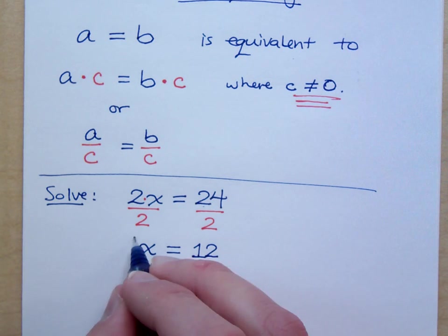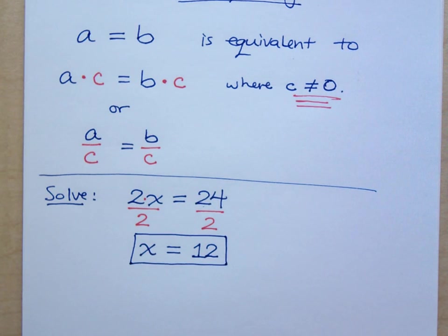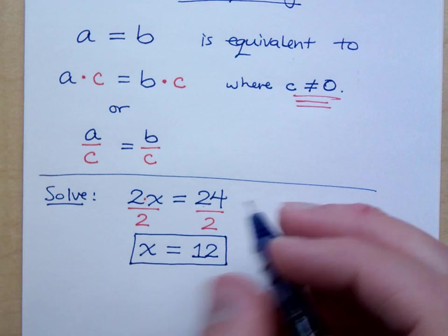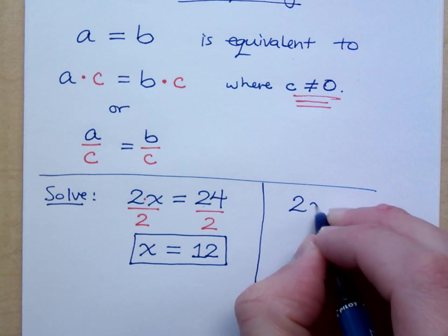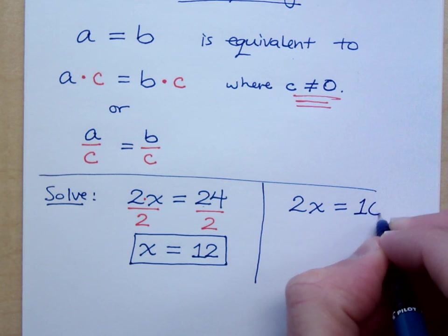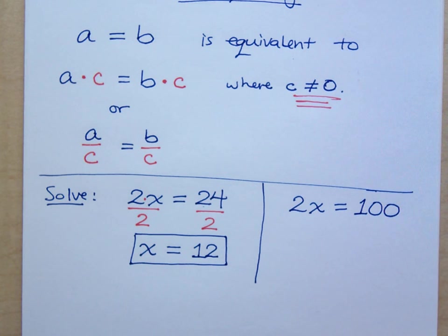Now, see, there was a math problem that was on TV last night. Joseph A. Bank, which is a men's clothing store that sells suits, they were talking about they were having a deal, they were having a sale. And this is basically what they were saying. You could buy 2 shirts for $100. This is the sale. 2 shirts for $100.